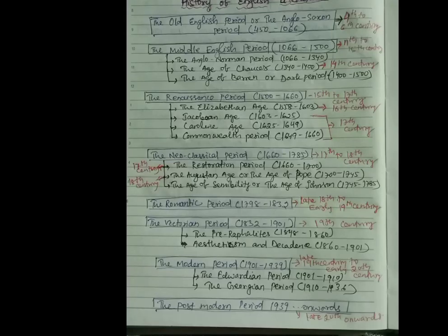Then the Middle English period. It started from 1066 to 1500 and it divided into three ages. One is the Anglo-Norman period that started 1066 to 1340, the Age of Chaucer 1340 to 1400, then the Age of Beren or the Dark Period. I have written all the ages, the timeline there. This Middle English period belongs to 11th to 15th century, and especially Chaucer, the Age of Chaucer, refers to the 14th century.